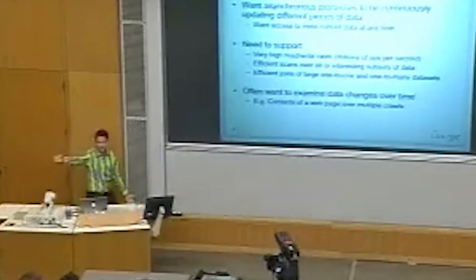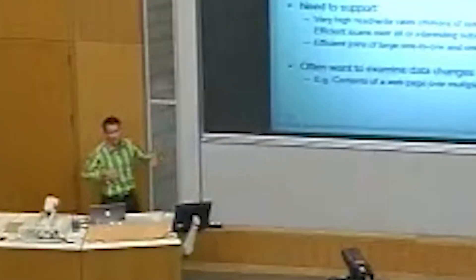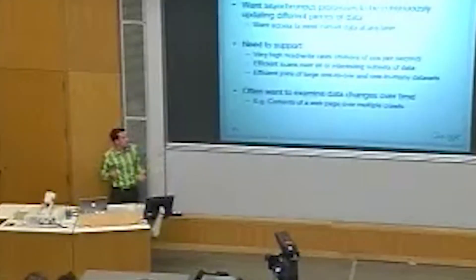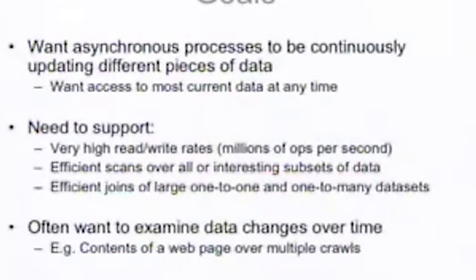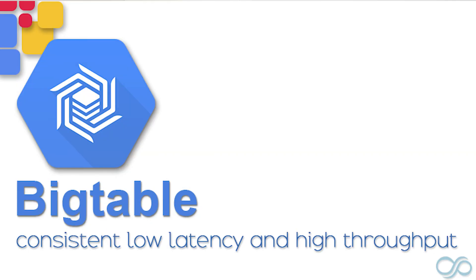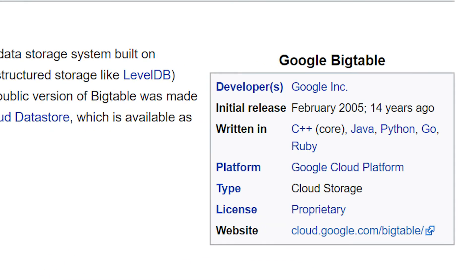This brings us to the database, which is Bigtable. Here we have a video of Jeff Dean, the lead of Google AI, explaining the goals of Google's database, which sums up why they had to go with their own solution. Their goals were to have an asynchronous process continuously updating different pieces of data, support very high read and write rates with efficient scans and joins, and have the ability to examine data changes over time. To solve this, they use a massive database called Bigtable, built using their Google File System (GFS). The system isn't fully relational but is apparently suiting their needs better, and based on a quick wiki search it's written in C++.